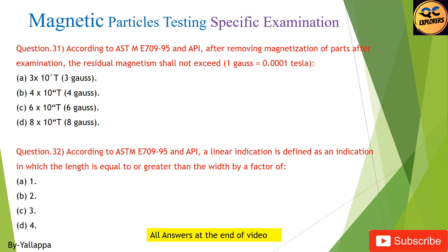Question 31: According to ASTM E709-95 and API, after removing magnetization of parts after examination, the residual magnetism shall not exceed: (A) 3×10 T; (B) 4×10 T; (C) 6×10 T; (D) 8×10 T.